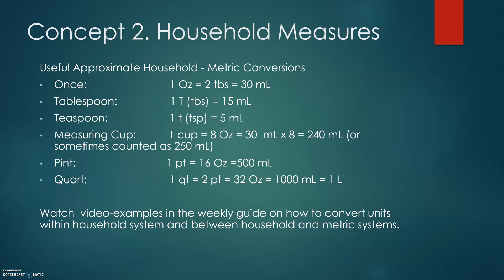Some important conversions: 1 ounce equals 2 tablespoons, which is 30 mL in the metric system. 1 tablespoon (T or TBS) equals 15 mL. 1 teaspoon (t or TSP) equals 5 mL. 1 cup equals 8 ounces, which is 240 mL (sometimes listed as 250 mL in other literature). 1 pint equals 16 ounces, approximately 500 mL. 1 quart equals 2 pints or 32 ounces, which is 1,000 mL or 1 liter. Please watch the video examples in the weekly guide on how to convert units within the household system and between household and metric systems.